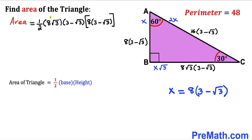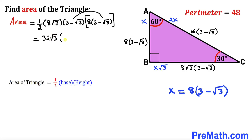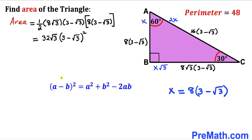Multiplying eight times square root of three by eight gives us 64 times square root of three, divided by two, which is 32 times square root of three. So the expression becomes 32 times square root of three times the quantity three minus square root of three, whole squared. Applying the identity (A-B)² = A² + B² - 2AB, this squared term expands to nine plus three minus two times three times square root of three, which gives us 12 minus six times square root of three.